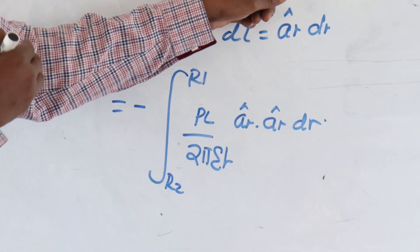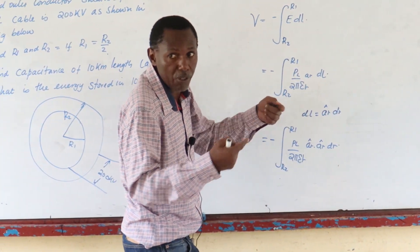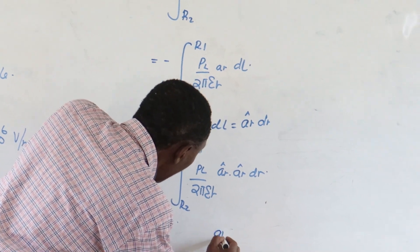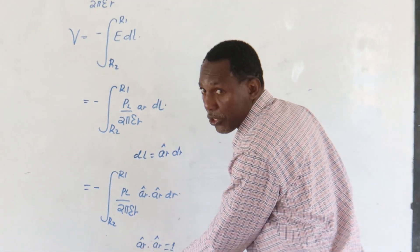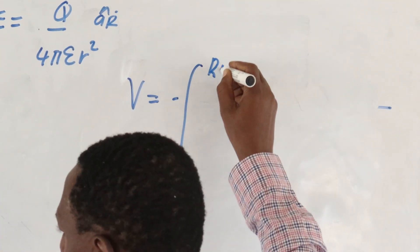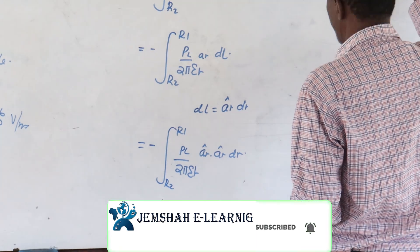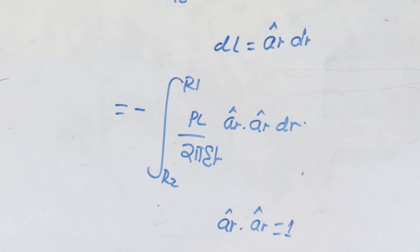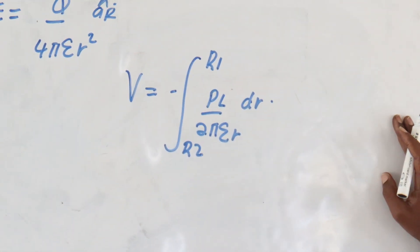The direction of the differentiation — we have replaced it because we want the distance of the cable, which is R, and we have changed it to R. And a_R · a_R is equal to 1. So we can simplify this into V being equal to the negative integral from R1 to R2 of PL over 2πε R dr. We have now simplified it up to that point.